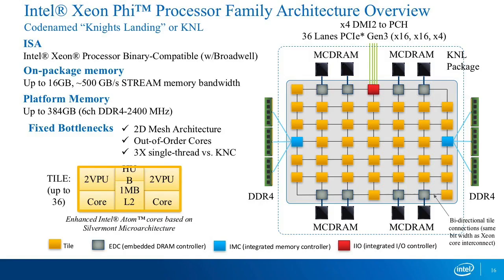Tile architecture: this is how KNL looks when you dive into the chip. We have those little yellow boxes — what we call a tile. There are 36 of those tiles connected by a 2D mesh. If you recall Knight's Corner, we had ring buses; Broadwell has two or three rings. Knight's Landing is the first Intel processor to have a 2D mesh.